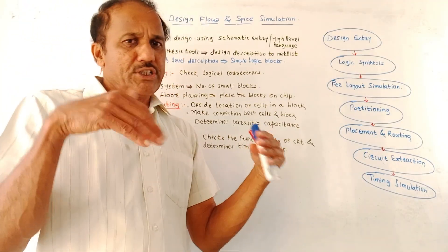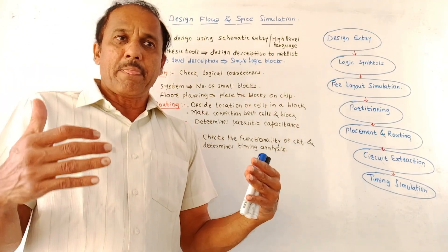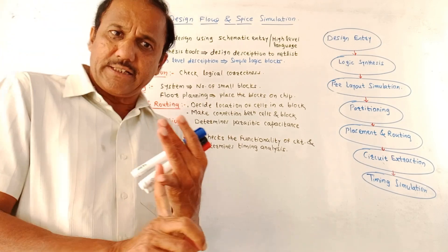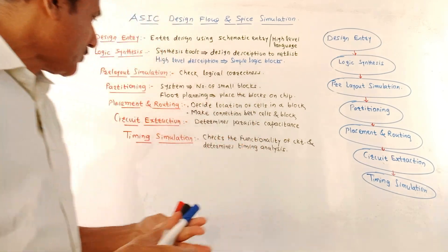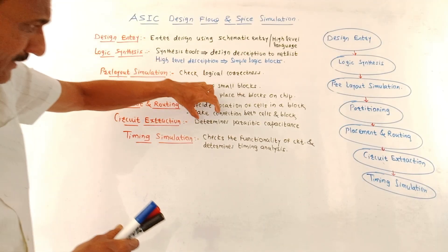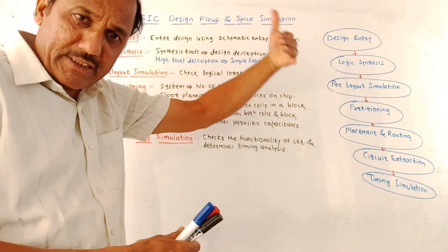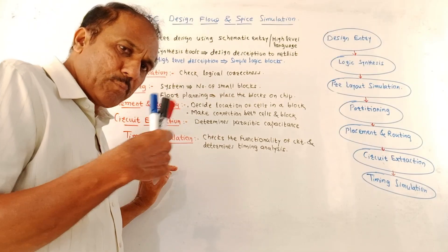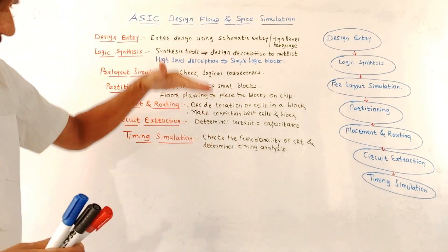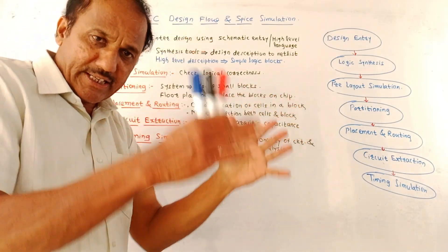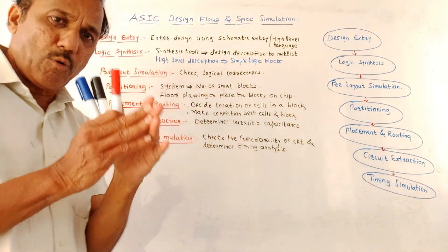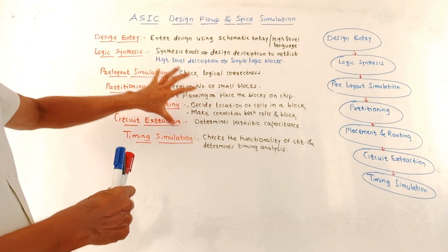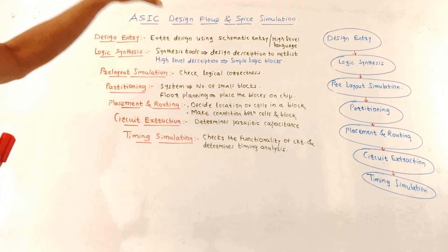Next is the circuit extraction. In the earlier video, we have discussed about the parasitic effect like effect or presence of parasitic capacitance. In such designing, there is effect of parasitic capacitance, parasitic resistance which is harmful. So circuit extraction step determines the parasitic capacitance as well as parasitic resistance. Then last block is timing simulator. As I said, this is also called post-simulation block. This block checks the functionality of the circuit after extraction of the parasitic components as well as it gives the timing analysis. So this is about the application-specific integrated circuit design flow.